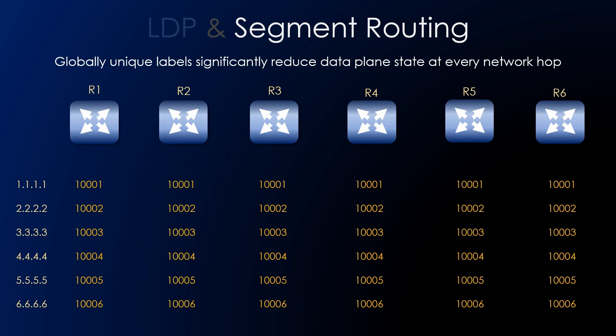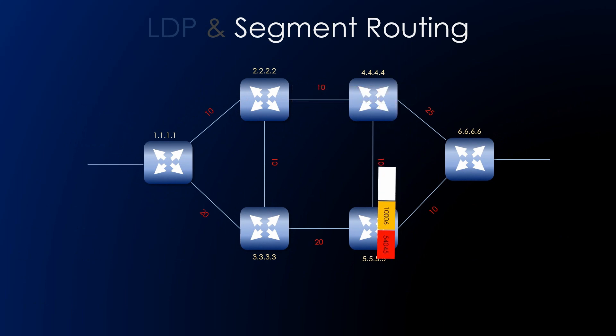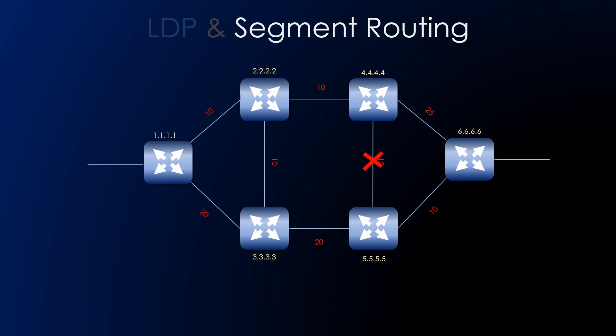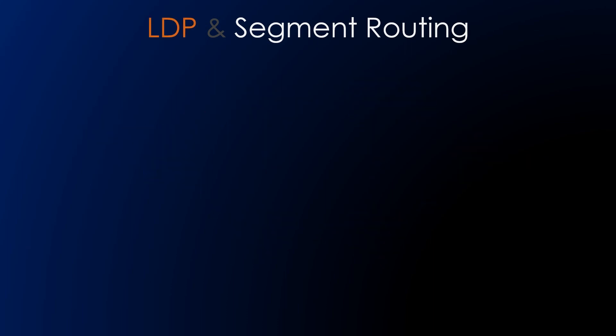Global unique labels significantly reduce the data plane state at every network hop. Whenever we traverse from ingress to egress, the source end decides and pushes the labels — there is no state in the intermediate nodes. Segment routing provides topology-independent loop-free alternate paths as its main source of fast reroute compared to LDP. No targeted LDP sessions need to be maintained, unlike LDP, which provides failure convergence challenges in ring topology or complicated partial mesh topologies.